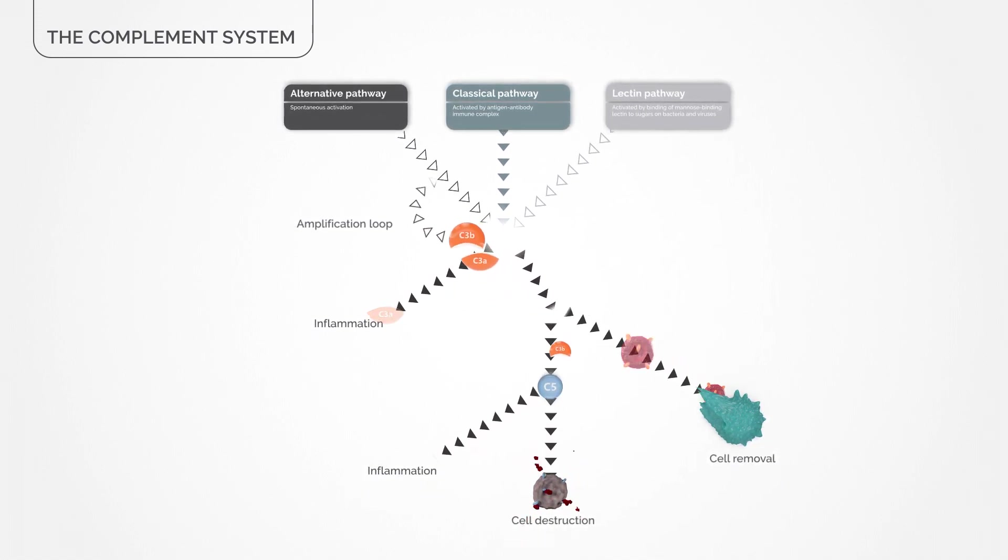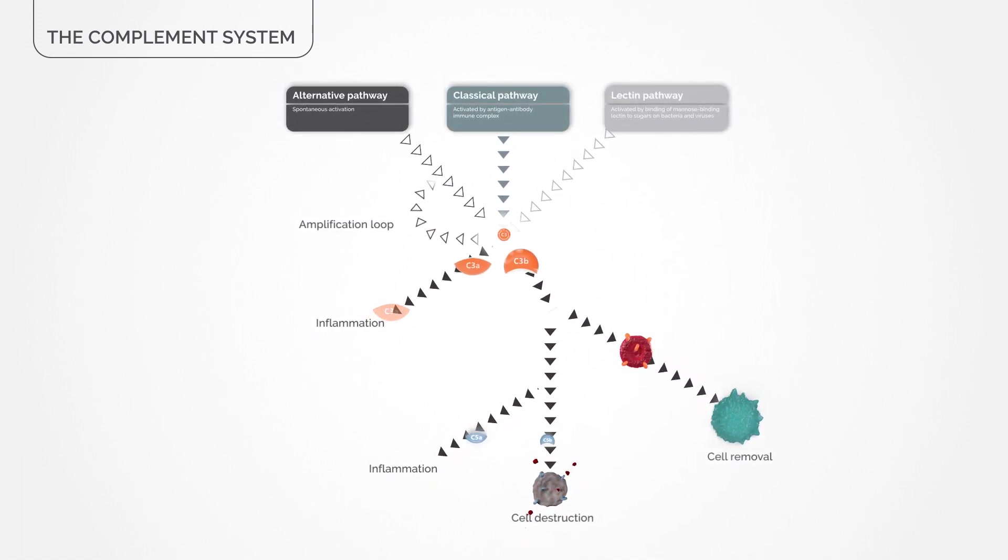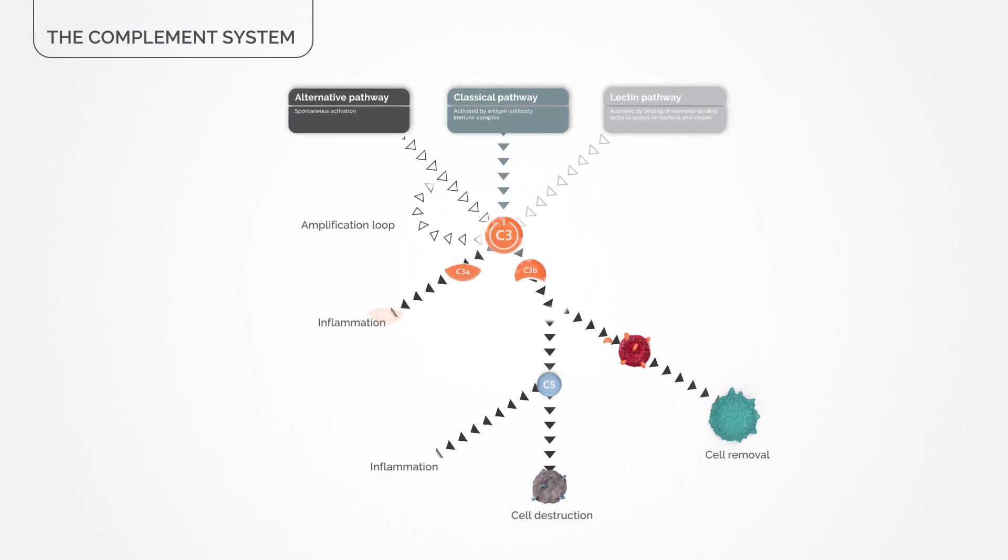C3 serves as the master switch, controlling all downstream effectors that ultimately cause destruction of the cell.